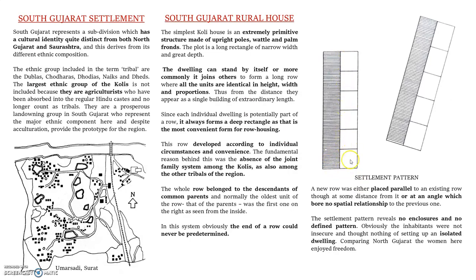These dwelling units, starting from the first unit of a particular row, follow wall-to-wall construction with a common wall. The first unit is occupied by one family, and the succeeding units are occupied by sons or daughters of those parents, so they extend their own territory in this row house type.